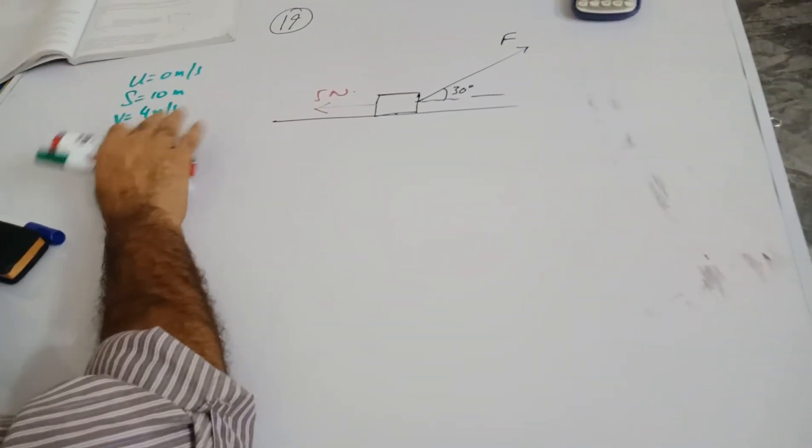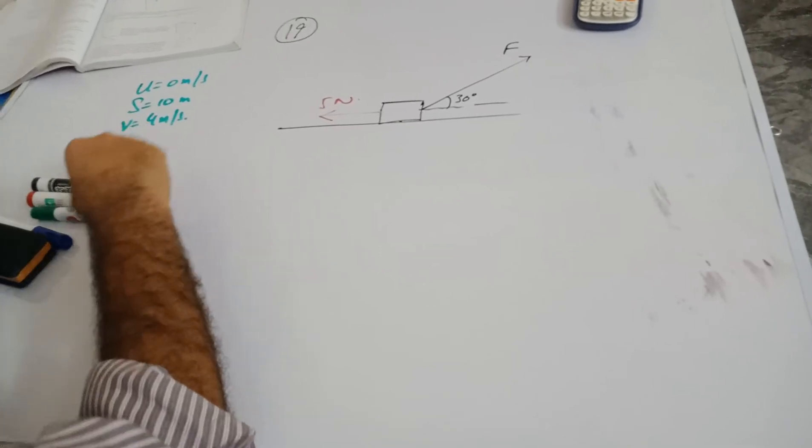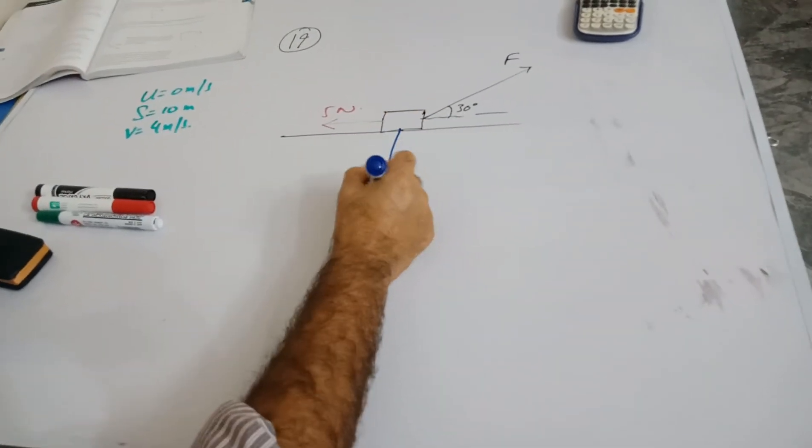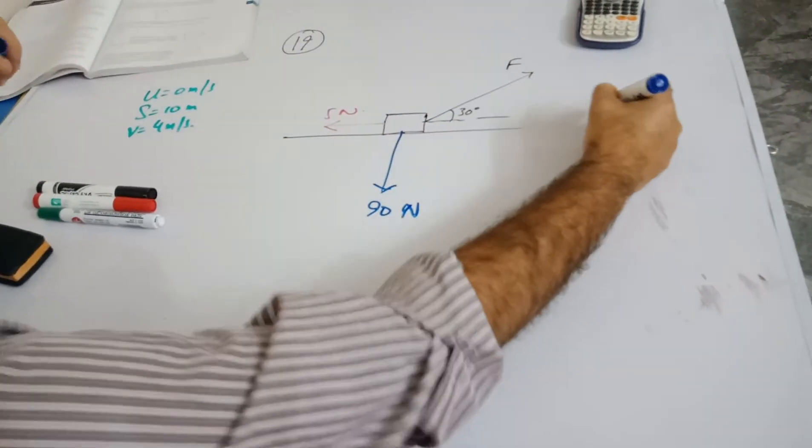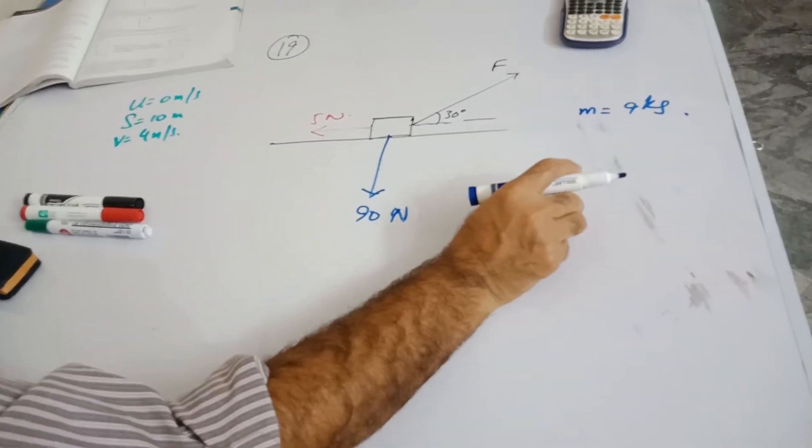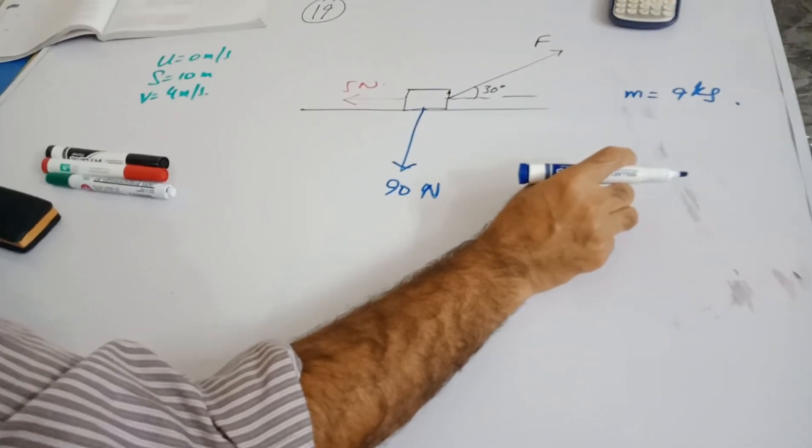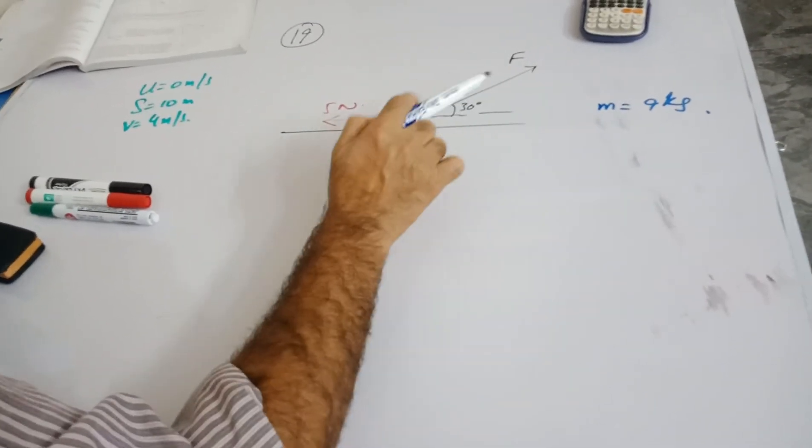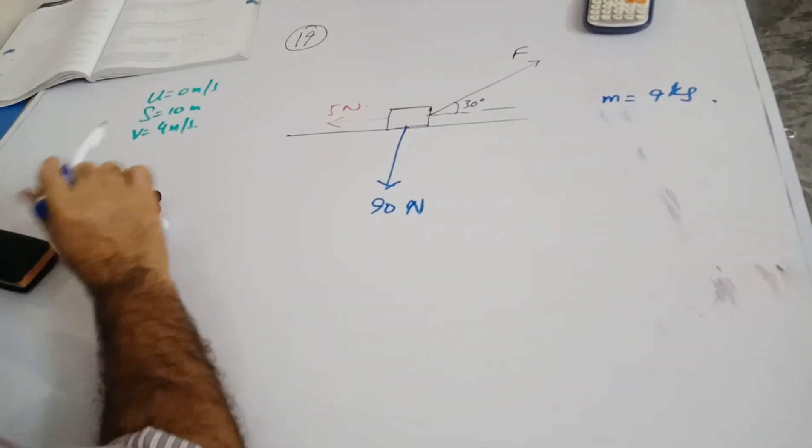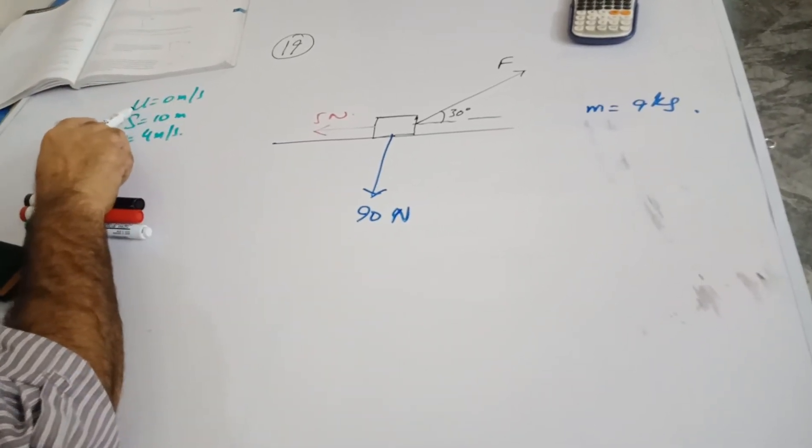Now this is an exam-like problem because here the frictional force is also involved and some other information regarding kinematics is given as well. It says a box of mass 9 kg. The mass is 9 kg, so I'm showing the weight as 90 Newtons. It's dragged along the horizontal ground by a force F acting at 30 degrees above the horizontal. There is a friction of 5 Newtons. The box starts at rest. I have mentioned this as zero.